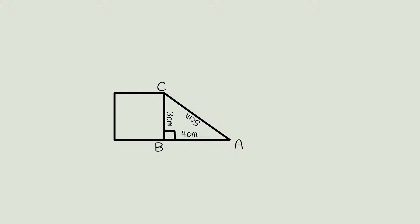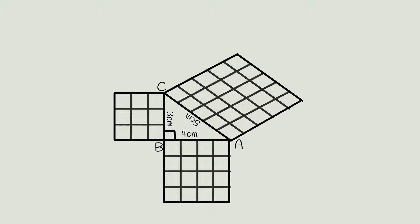Construct squares on all three sides and divide them into squares of sides 1 cm each. Now count the number of small squares on all three sides. They are 9, 16, and 25. If we add 9 and 16, we get 25.